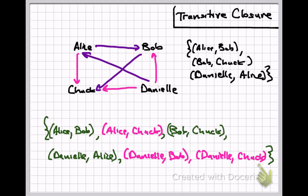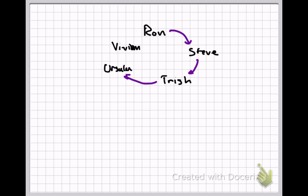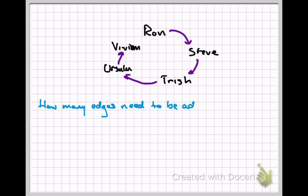Let's consider a second social network with users Ron, Steve, Trish, Ursula, and Vivian. Ron follows Steve, Steve follows Trish, Trish follows Ursula, and Ursula follows Vivian. Again, let's assume these are all one-way relationships like Twitter. This is not a transitive relation — which edges would we need to add in order to end up with a transitive relation?